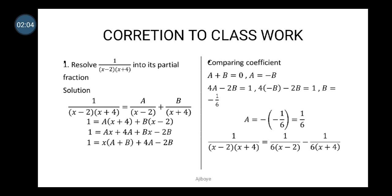When you multiply both sides by the LCM, which is the denominator of the complex fraction, you would then have 1 equal to A(x plus 4) plus B(x minus 2). If you open the brackets you have 1 equals ax plus 4a plus bx minus 2b.